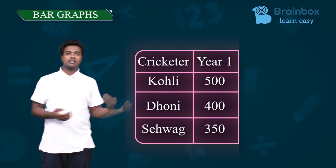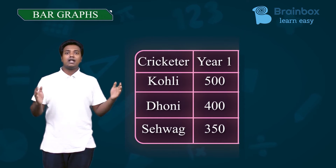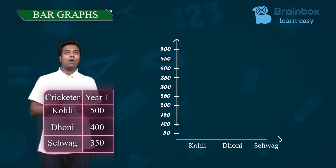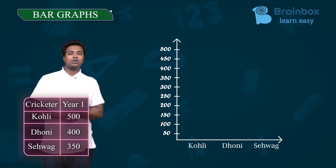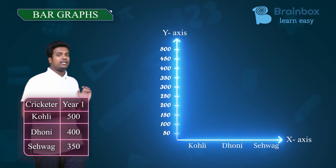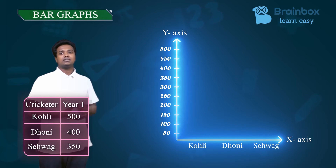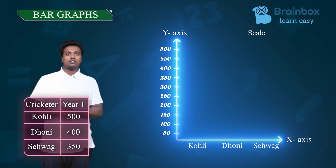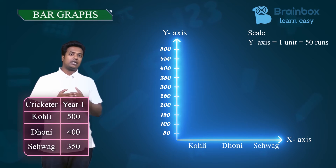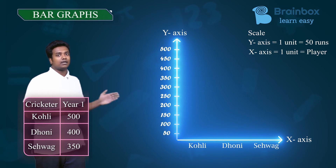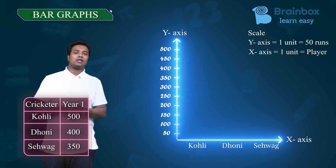In order to represent this tabular data in a bar graph, first we have to draw X and Y axes. This is our Y axis and this is our X axis. We need to scale the axes first. For one unit of the Y axis, I will be considering 50 runs, and for the X axis, I will be considering the player's name.